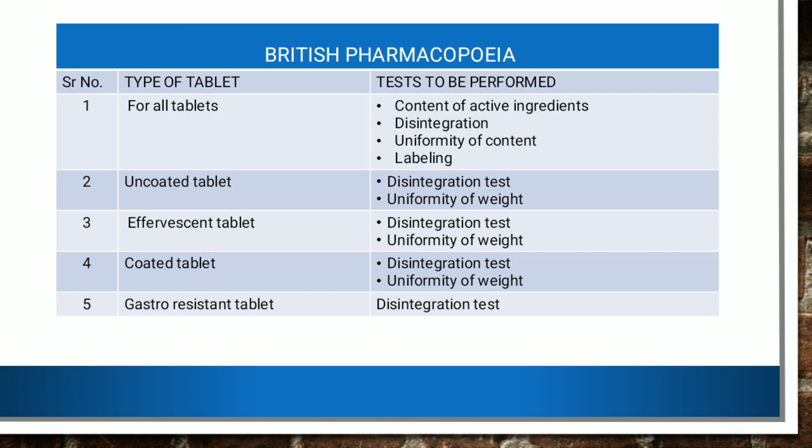For uncoated tablets according to British Pharmacopoeia, the tests that need to be performed include disintegration test and uniformity of weight. For effervescent tablets, again we have to perform disintegration test and uniformity of weight. For coated tablets, we again perform disintegration test and uniformity of weight. For gastro-resistant tablets, we need to perform the disintegration test.